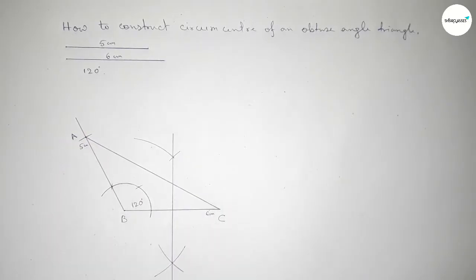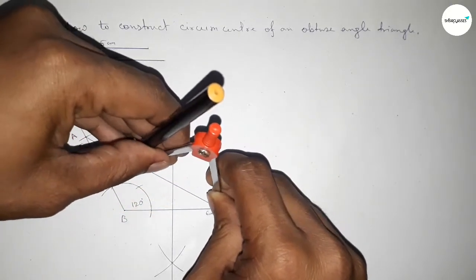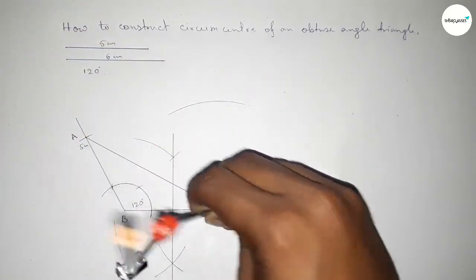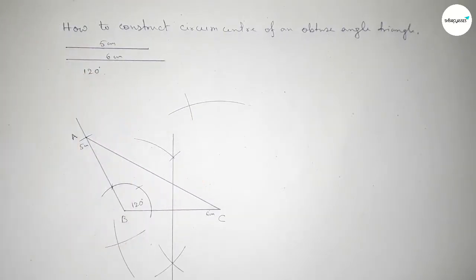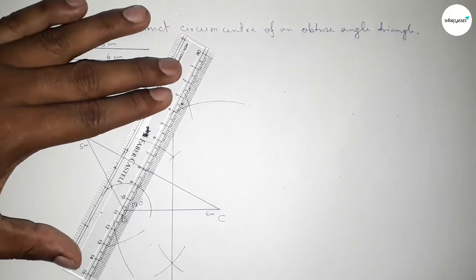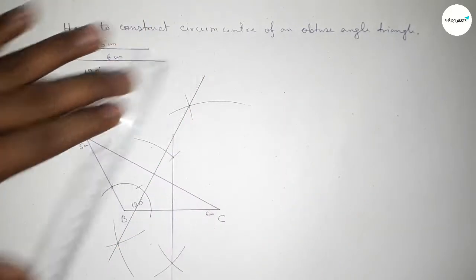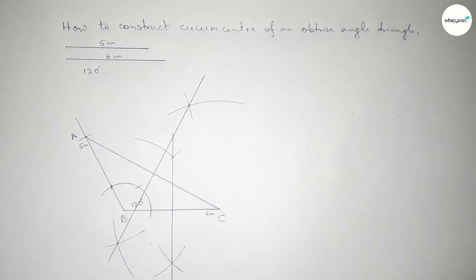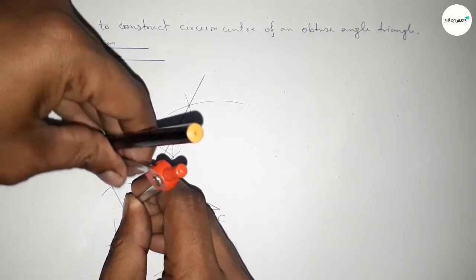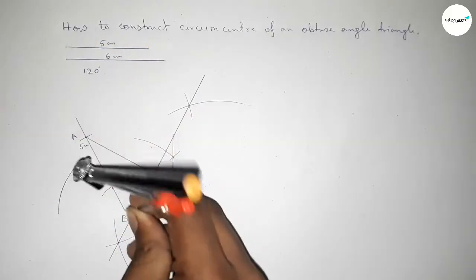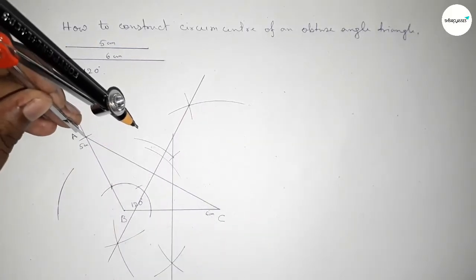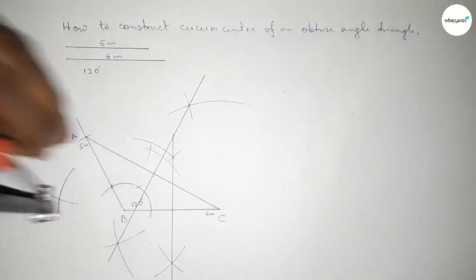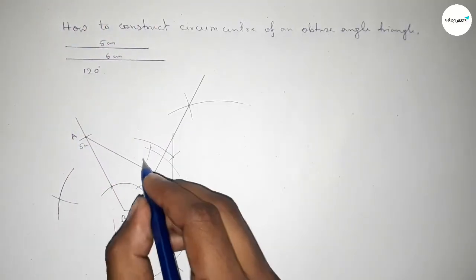Next we have to bisect the line AC. Putting the compass here and taking greater than half of AC, drawing an arc with the same length. Putting the compass here and cutting here on both sides, so both curves intersect at two points. Joining this line.